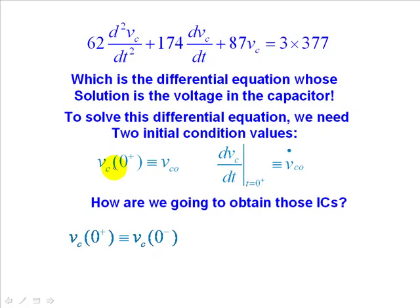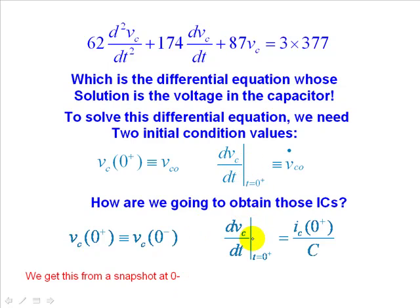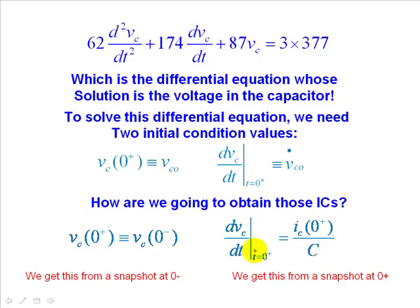We only have to remember that the voltage in the capacitor right after we close the switch is the same value of the voltage in the capacitor before we close the switch. So we're going to find this value from a snapshot of the circuit at zero minus. That value we can compute, remembering that dVc/dt is always the current in the capacitor divided by its capacitance, and that is valid also at zero plus. So we solve the snapshot of a circuit at zero plus, find the current in the capacitor at zero plus, divide by C, and that gives us the other initial condition dVc/dt at zero plus.